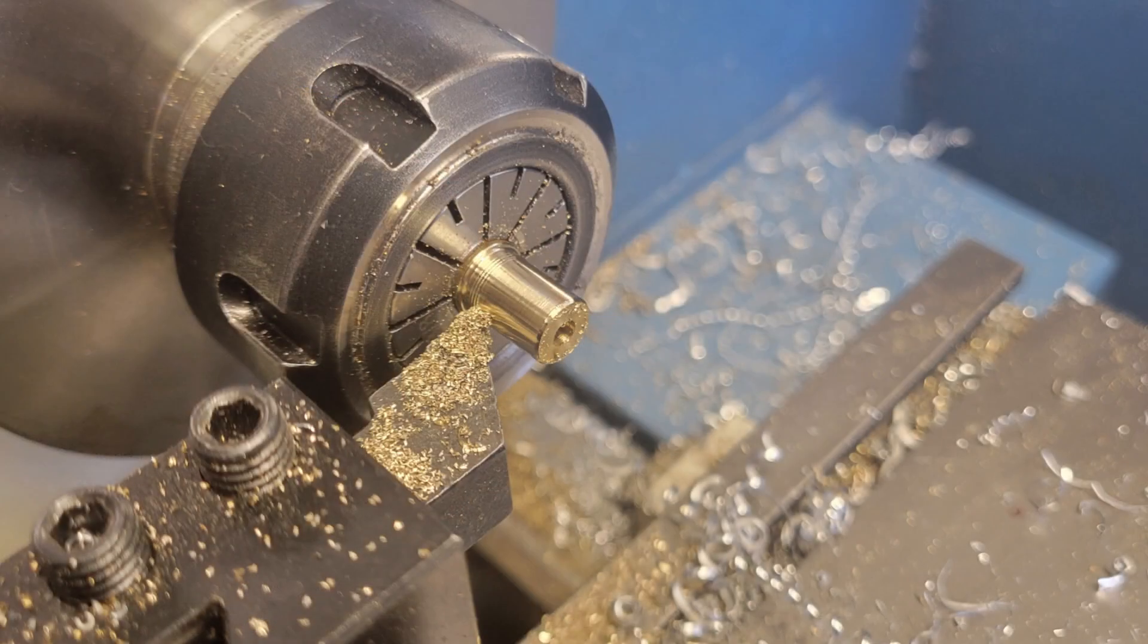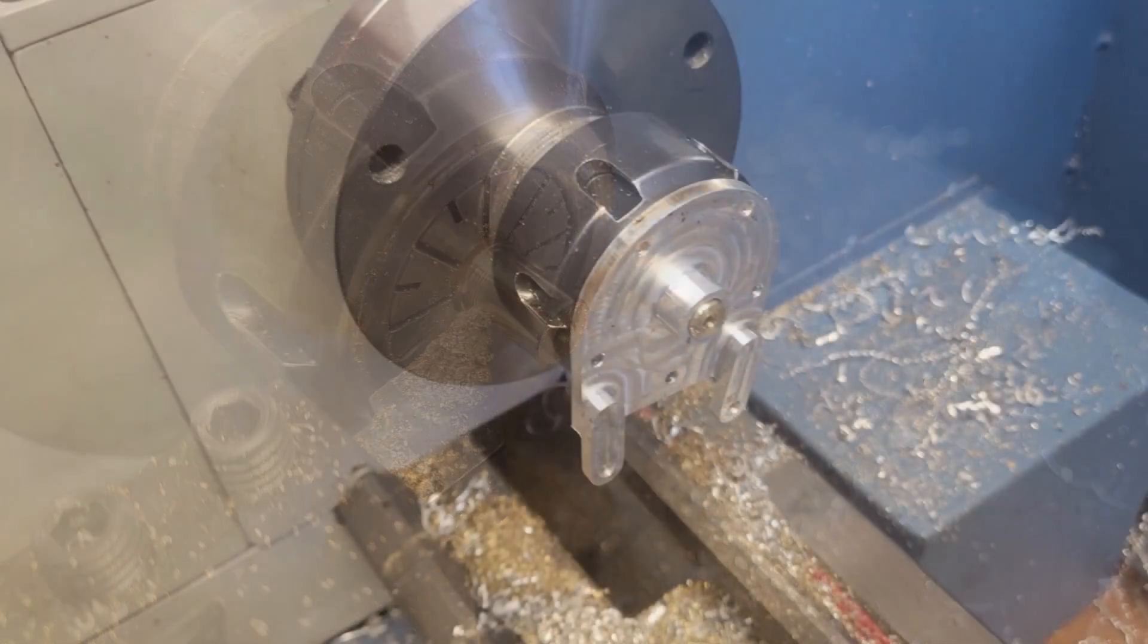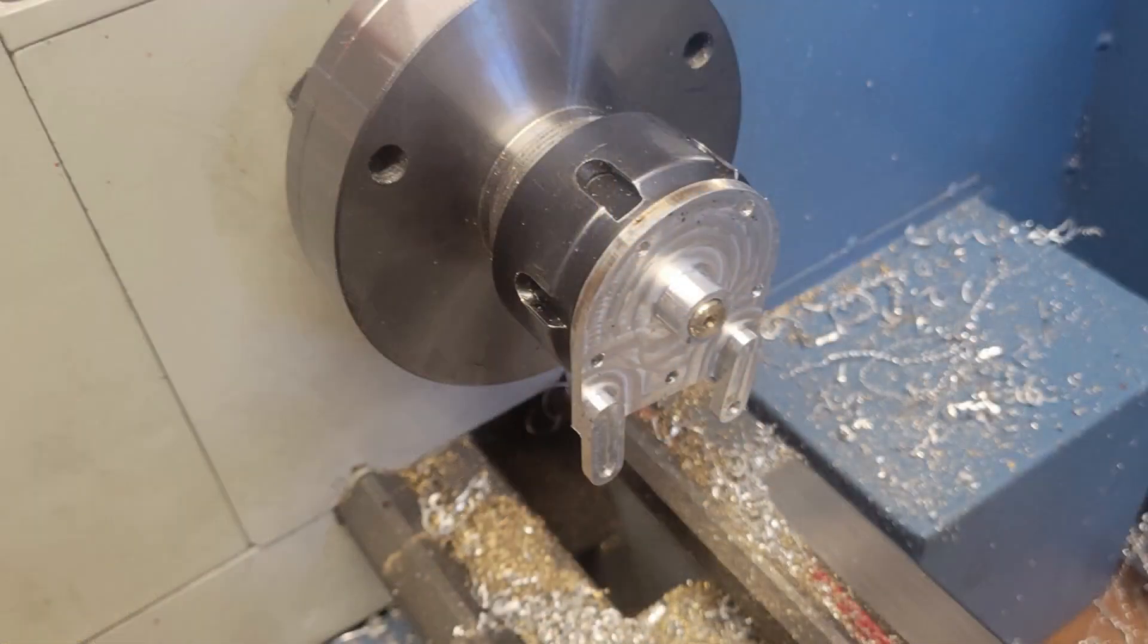The brass bushing for the water pump shaft is straight forward. The only critical operation is we'd like it to be a snug fit within the bracket so our pulley and impeller run true.